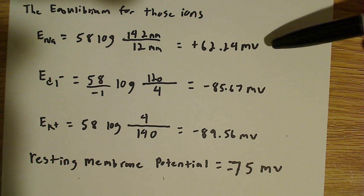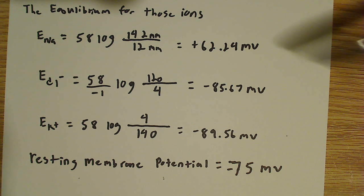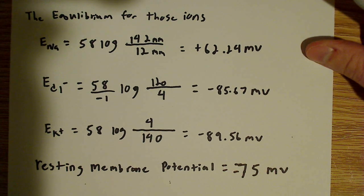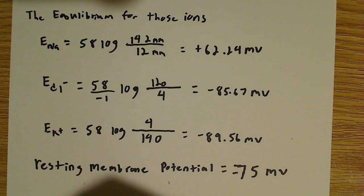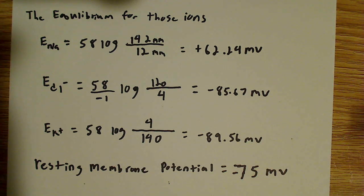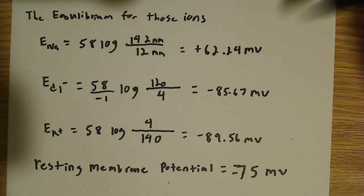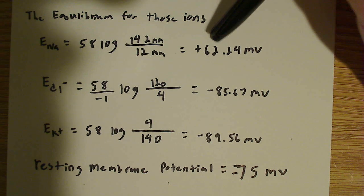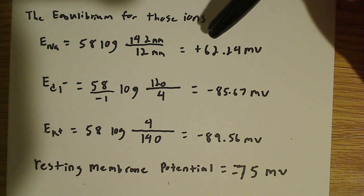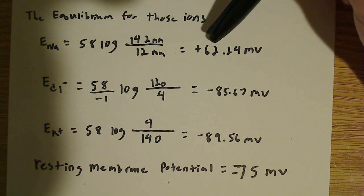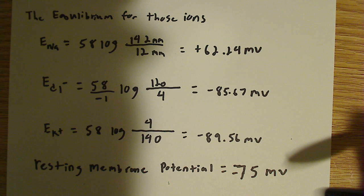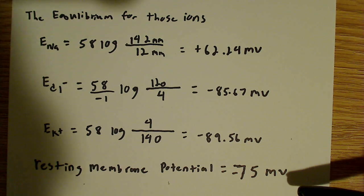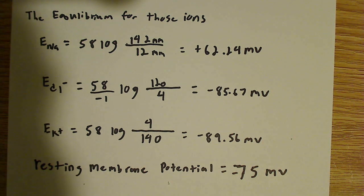Likewise, that same logic applies to sodium ions. They're positively charged, so they want to flow into the cell in order to make it more positive, trying to bring the potential closer to plus 62.24 millivolts as opposed to negative 75 millivolts.